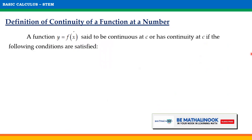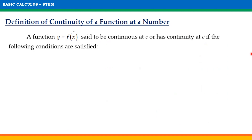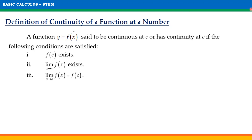With these examples, how can we say that a function is continuous at a number C — where the graph will not have a hole, a jump, or a gap? A function y = f(x) is said to be continuous at C if the following conditions are satisfied. First, f(C) exists. Second, the limit of f(x) as x approaches C exists. Third, the limit of f(x) as x approaches C is equal to f(C).